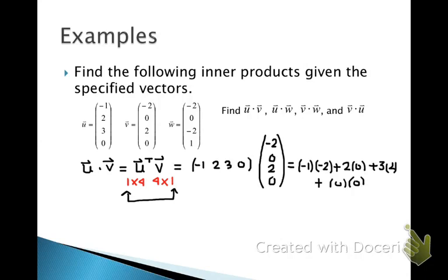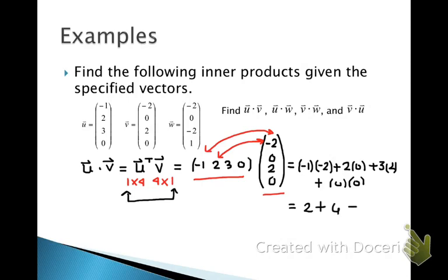So we're showing here the steps for finding the inner product. We have u transpose and v, and what that amounts to is multiplying the first elements of u and v together, and adding to that the second elements of u and v multiplied together. The result of this inner product is going to be 2 plus 6, which gives us a final answer of 8.